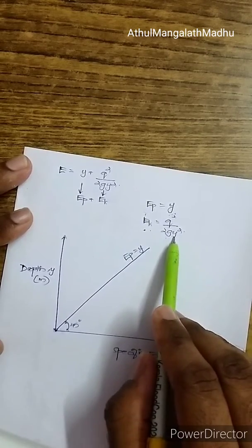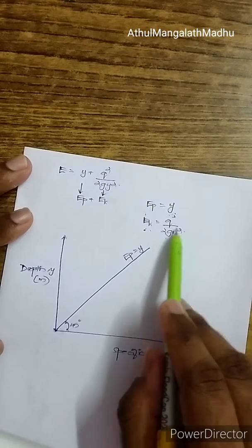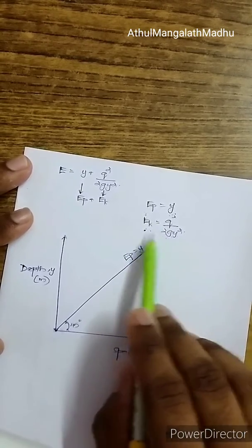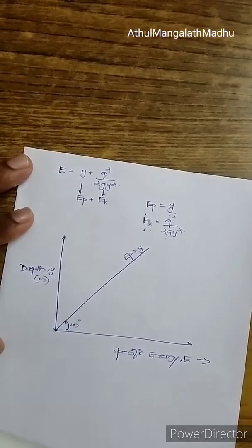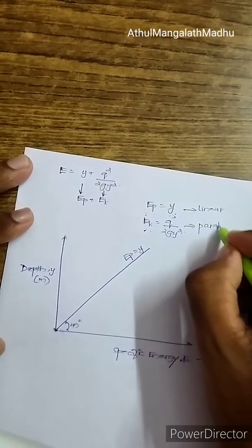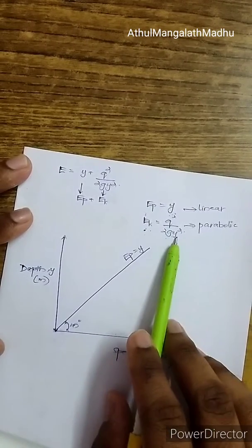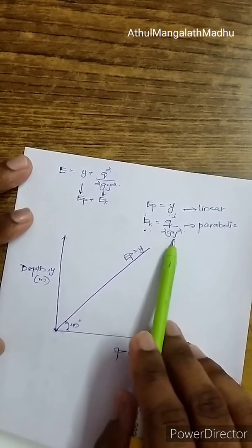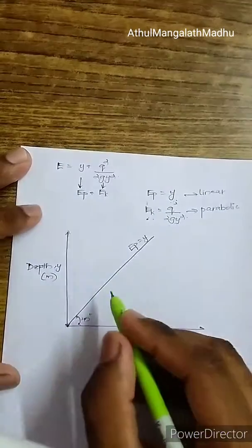Now plotting EK = q²/(2g·y²) against y: since y is squared, whether y is positive or negative you get the same EK value, making the variation parabolic in nature. For y = −1 or +1 you get the same EK, and similarly for y = −2 or +2. So the EK vs y curve is parabolic.